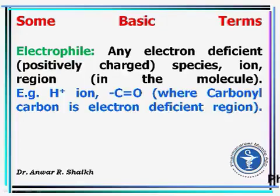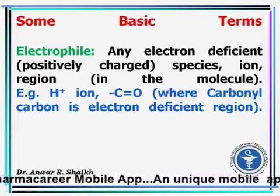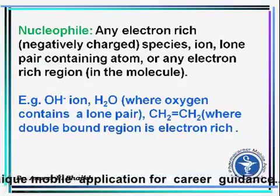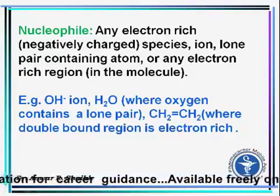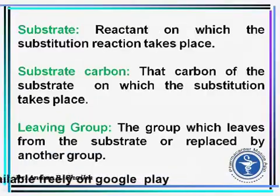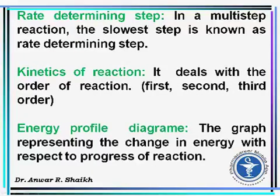Before starting the topic, let us see some basic terminologies. Electrophile: any electron-deficient or positively charged species, or any electron-deficient region in the molecule. For example, H+ or C=O where the carbonyl carbon is the electron-deficient region. These are known as electrophiles. Nucleophile: any electron-rich or negatively charged species.